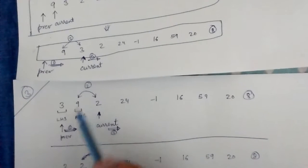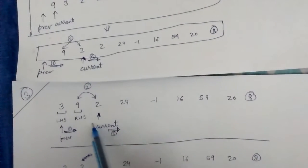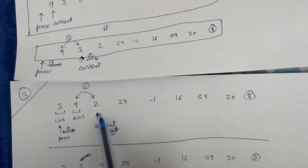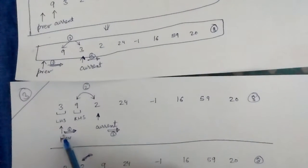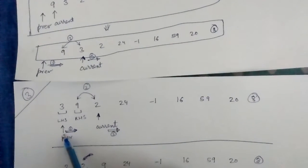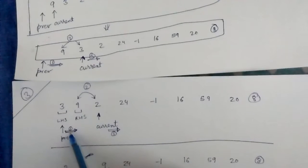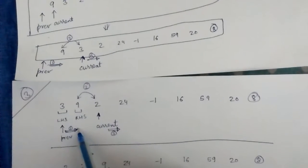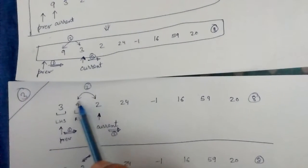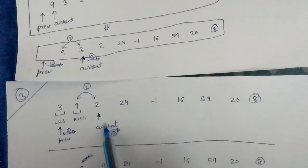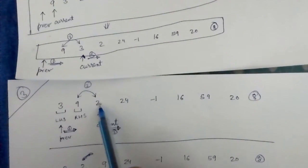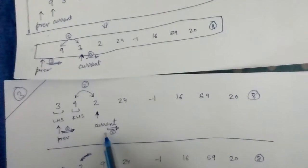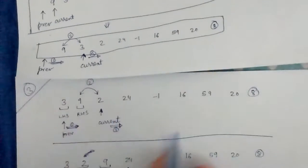Current is now at 2, which is still less than 8, so this falls into case 2. We move prev by one step, exchange the elements pointed to by prev and current — that is 9 and 2 — so 2 comes here and 9 goes there. Then we move current one step further and get the updated array.